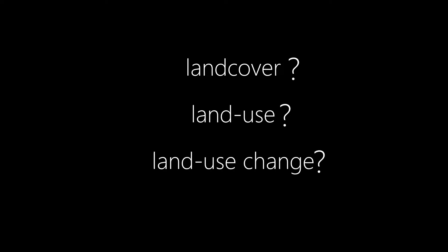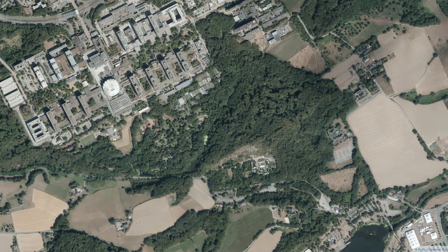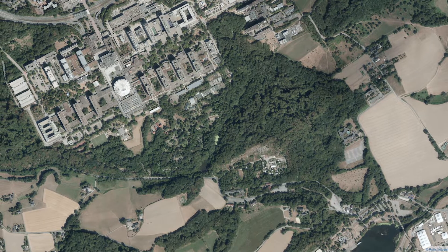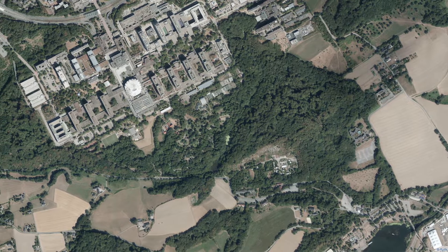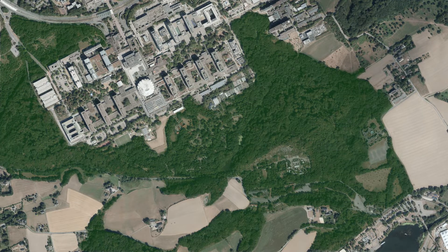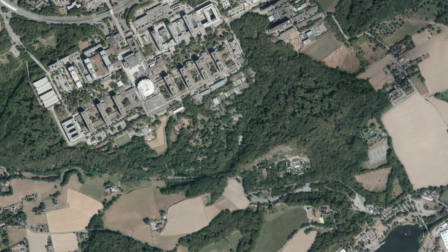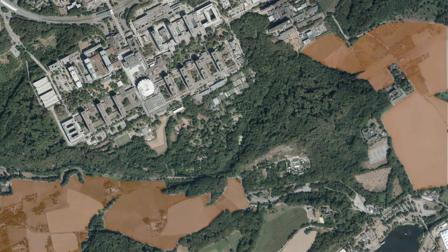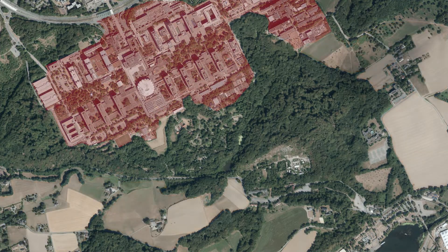We refer to land cover as the observed surface of the earth, including vegetation, crops, and man-made structures. Land cover can therefore be both natural and man-made, i.e., anthropogenic.